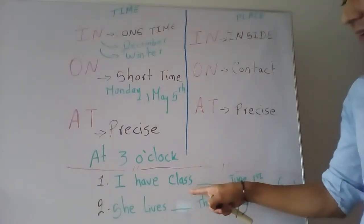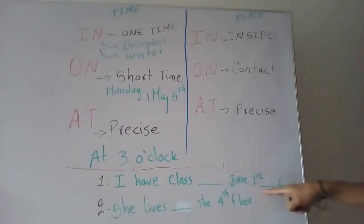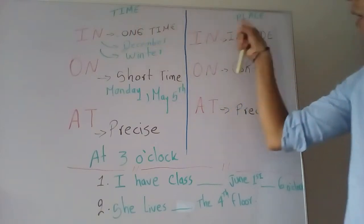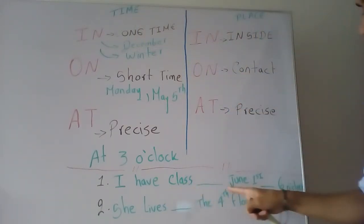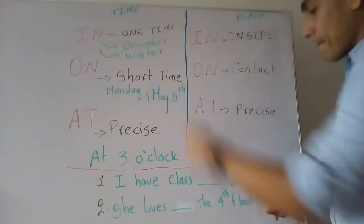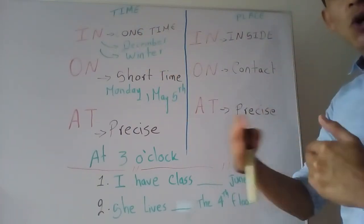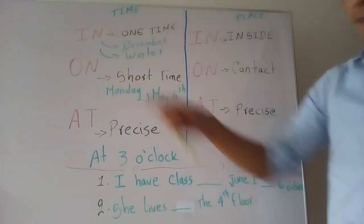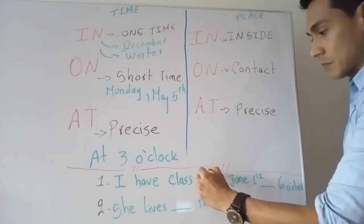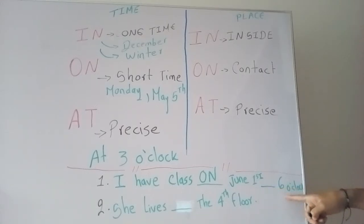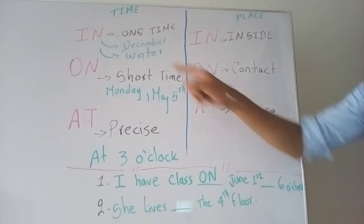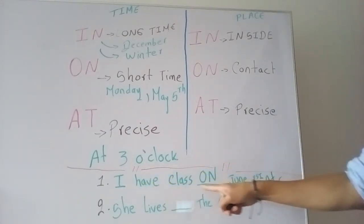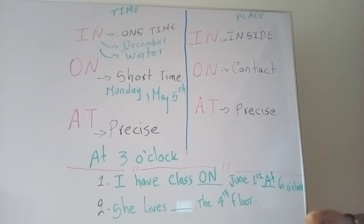Example number one: I have class ___ June 1st, ___ 6 o'clock. Is this time or place? June 1st is a time — it's only one day, a short time — so in, on, or at? Right, 'on.' On June 1st. And for the time, for the hour, we say 'at.' So: I have class on June 1st at 6 o'clock.